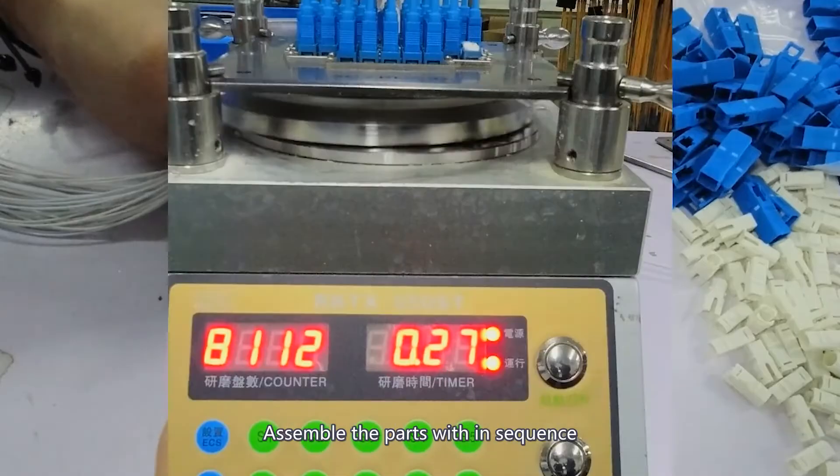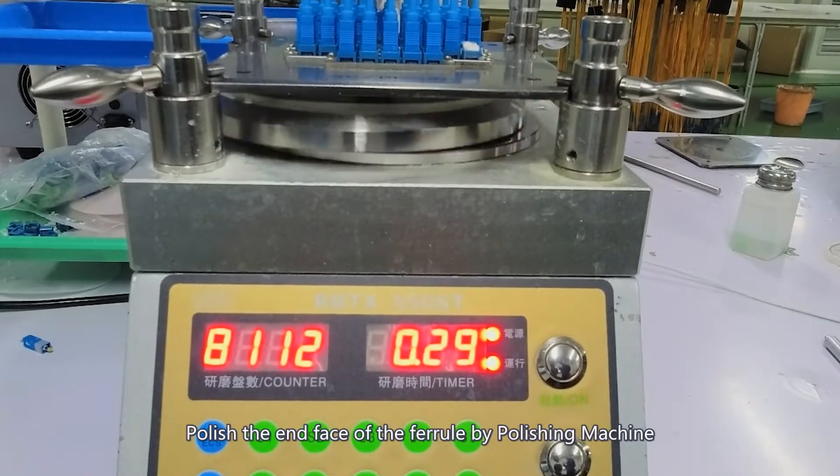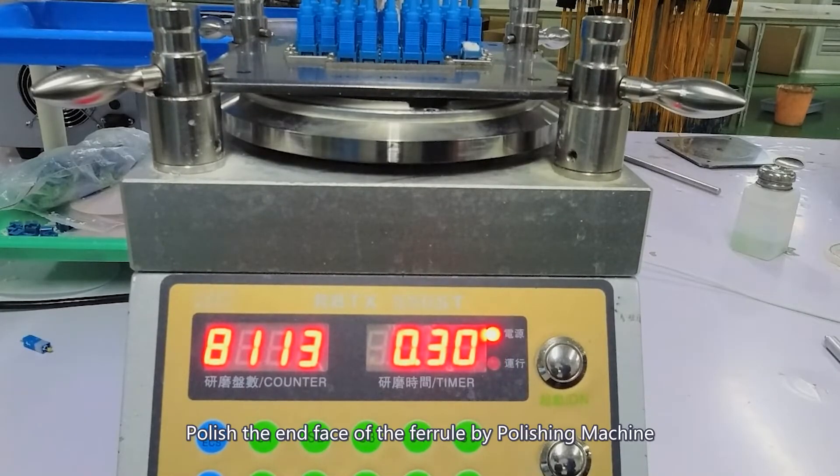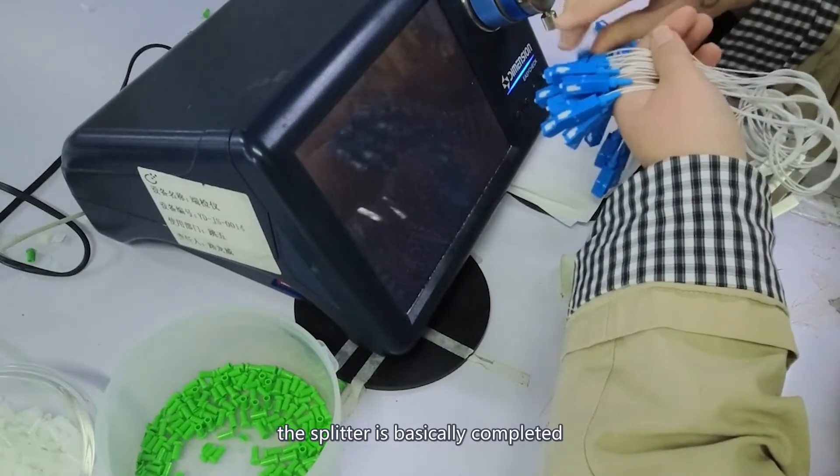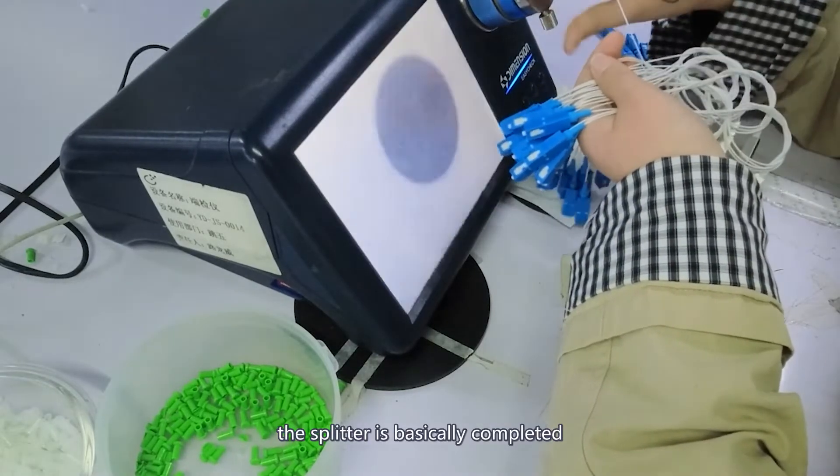Assemble the parts in sequence. Polish the end face of the ferrule by a polishing machine. Generally speaking, the production process of the splitter is basically completed.